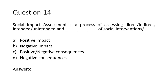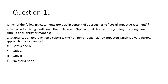Question fifteen involves two statements about approaches to social impact assessment. Statement one: many social change indicators like behavioral or psychological change are difficult to quantify or monetize. Statement two: the quantification approach only captures the number of beneficiaries impacted, which is a very narrow approach to social impact. Both statements are correct, so the answer is A. You may get many such two-statement questions in the exam — read carefully.